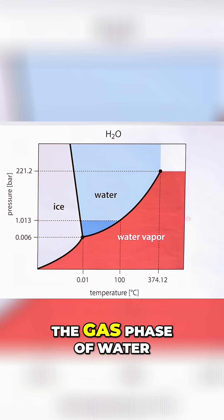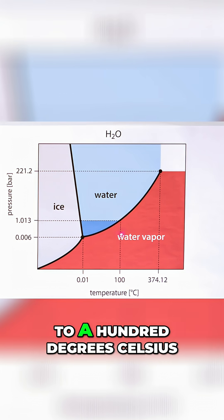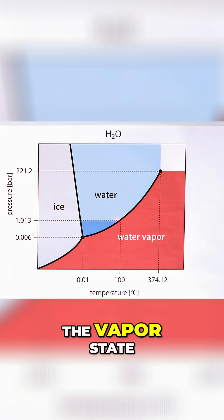So here at zero Celsius, we have ice melting, and then if we keep adding heat up to 100 degrees Celsius, eventually it turns to the vapor state. This is what we're experiencing all the time when we boil water on the stove: solid, liquid, gas.